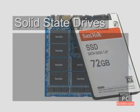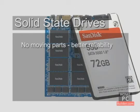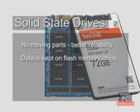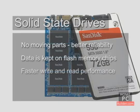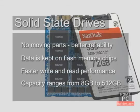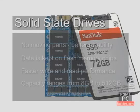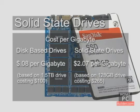Solid state drives, or SSDs, have no spinning disk to store data on. All information is kept on flash memory chips and can be written to and read back much quicker than from a disk-based drive. Compared to disk-based drives, SSDs have lower capacities of between 8 GB to 512 GB, and the cost per GB is also much higher. Larger solid state drives are coming and you can expect the cost per GB to drop, but disk-based drives will continue to be the most popular due to their far greater storage capacity.